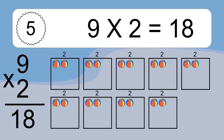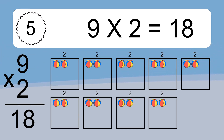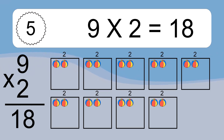9 times 2 equals what? We have 9 boxes, and each box has 2 colorful balls inside. If you count all the balls in all the boxes together, you will have 9 times 2 balls. This equals 18 balls.